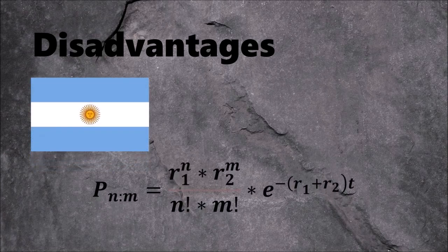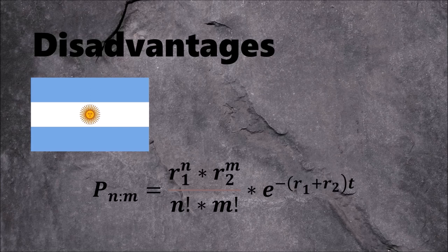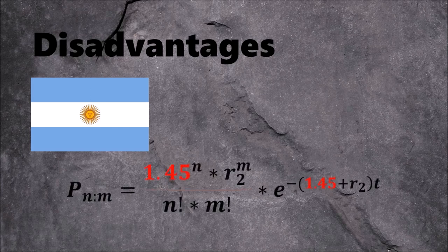Argentina wins, loses, and ties against the biggest football nations in the world, resulting in an average goal value of 1.45.